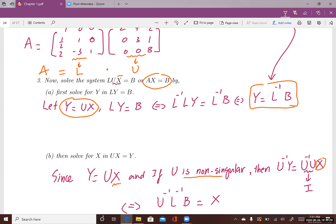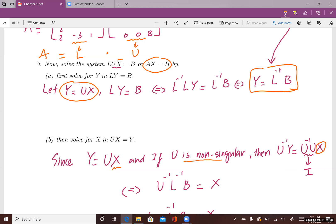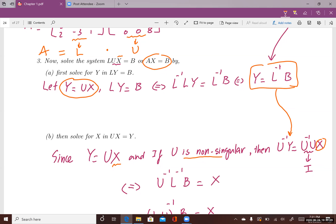At this point, X equals U inverse times Y. And what is Y? I just found Y equals L inverse times B. So then X equals U inverse times L inverse times B.